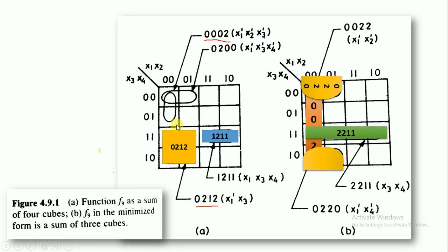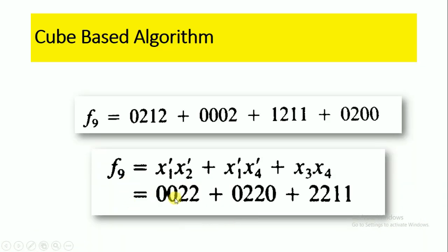All these cubes—0212, 1211, 0002, and 0200—are covered by these cubes: 0220, 0022, and 0211. These three cubes cover the original four cubes. So the function f9 is represented as 0022 plus 0220 plus 0211. Here we have only three cubes.